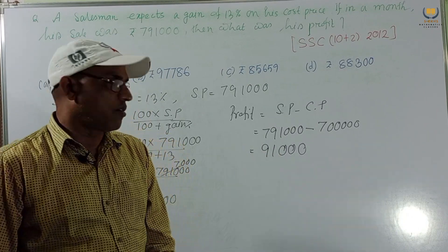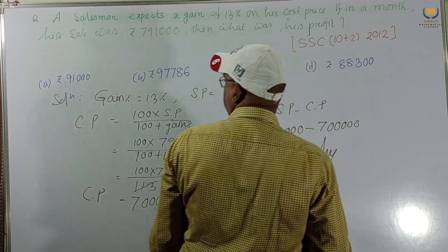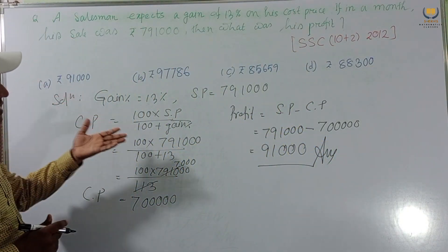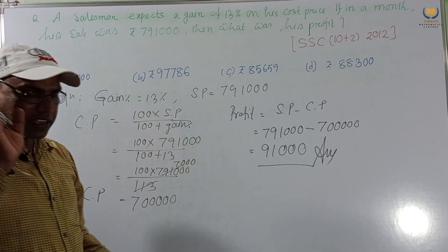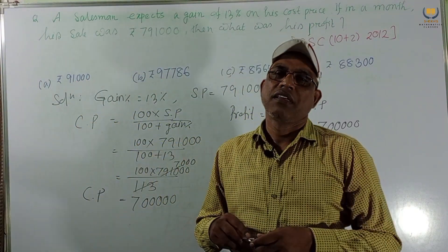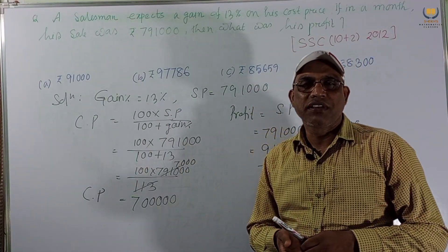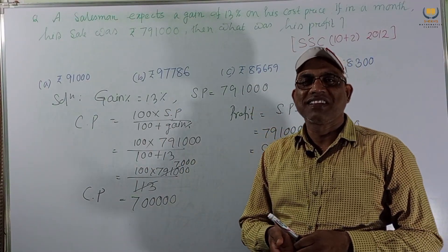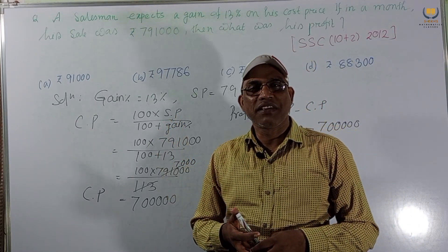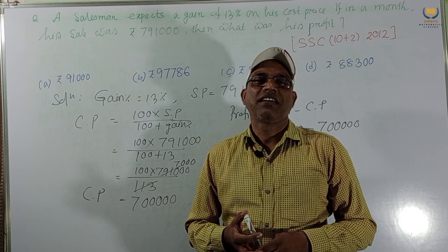The correct answer is option A — profit is 9,100 — just using the formula given in the first video. I hope you are all enjoying this type of problem. If you are, please like this video. If you are new to my channel, please subscribe and click the bell icon. Thank you.